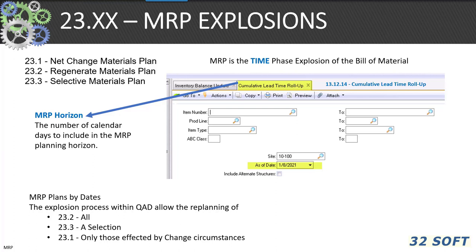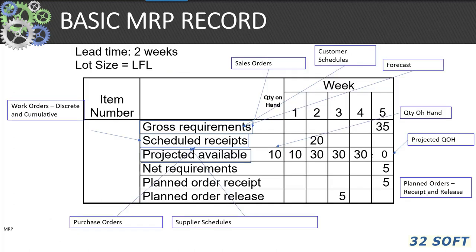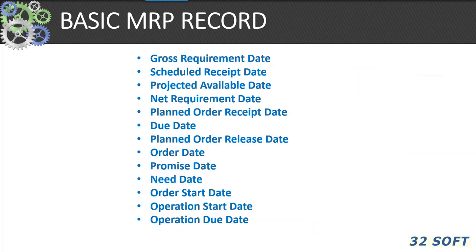MRP was the original enterprise program driven by dates. Orlicky and Plossl invented MRP in the late 1960s — it is the time-phased explosion of the bill of material. The dates associated with the basic MRP record include gross requirement dates, scheduled receipt date, projected available, net requirement, planned order receipts due dates, planned order release, order promise, need, and operational start and due dates. You need to understand how and why MRP works with dates.